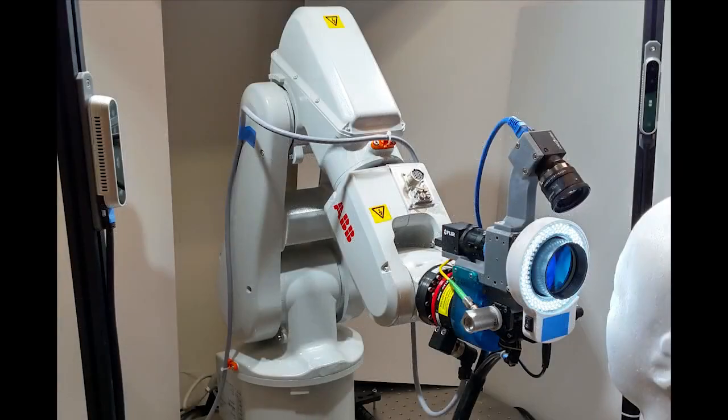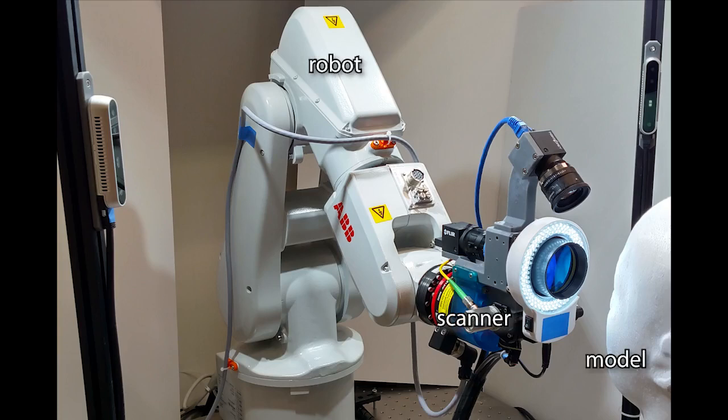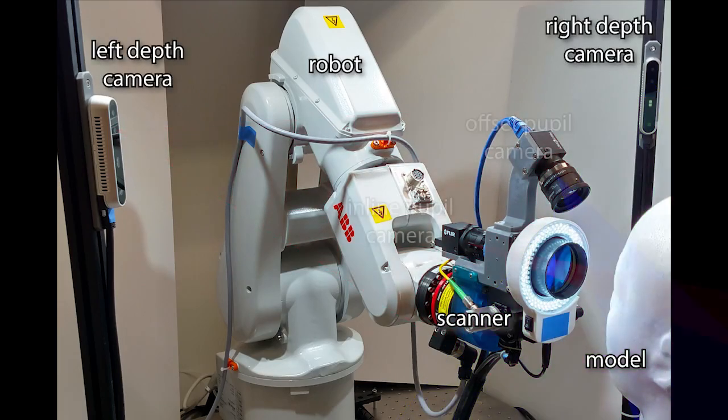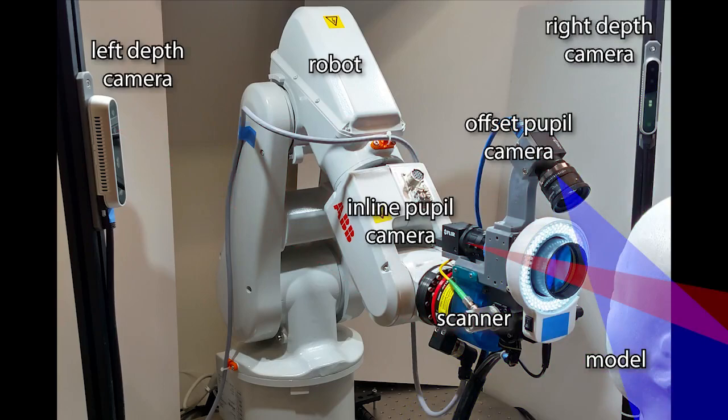This video describes the robotically aligned scanner we developed to automatically acquire optical coherence tomography images of stationary and moving eyes. The system uses two depth cameras for initial gross alignment and two pupil cameras for subsequent fine alignment.